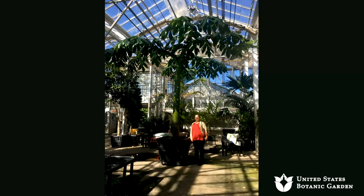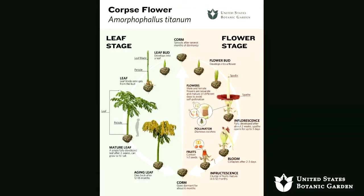We can show the life cycle diagram here. There's a dormant period, then the corm sprouts — going right it produces a flower, going left it enters the leaf stage. It's either going to produce a bloom or a leaf each time. Then the flower will either produce fruit or senesce and go back dormant. The leaf itself will senesce at some point and go back to dormancy as well.